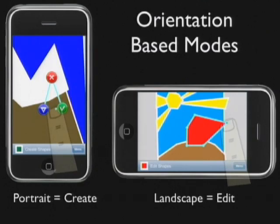One of the ideas I had was to reduce the number of modes that you have. I wanted to encode them physically in the state of the device. To create objects, you hold the phone in portrait mode, and to edit objects, you hold the phone in landscape mode.